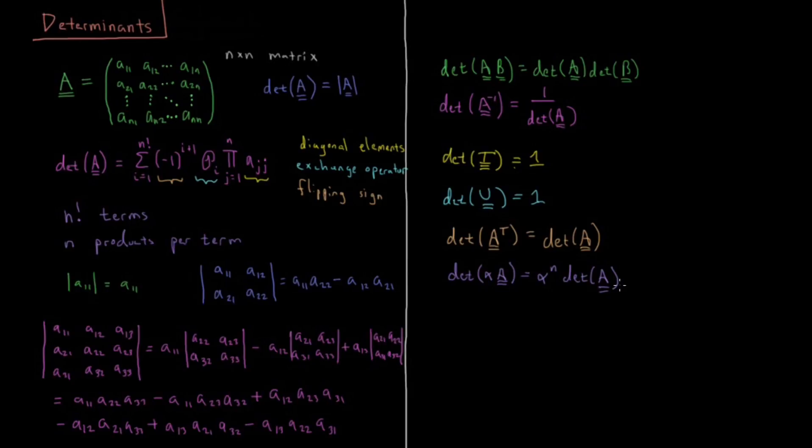Okay. If we have a diagonal matrix, a matrix which only has non-zero values down the diagonal here.